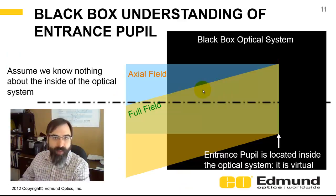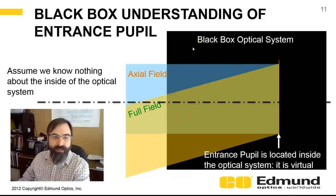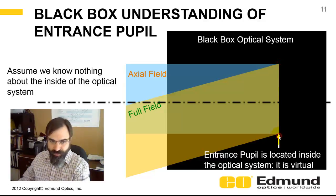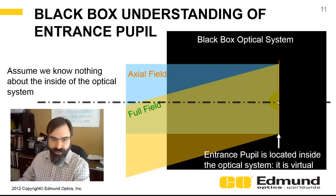From a black box standpoint, if you don't know what's inside your optical system, you can view it as a black box. You can simulate how the bundle of rays moves versus field by knowing where your entrance pupil is located. In this case, the entrance pupil is inside the optical system and it's virtual.